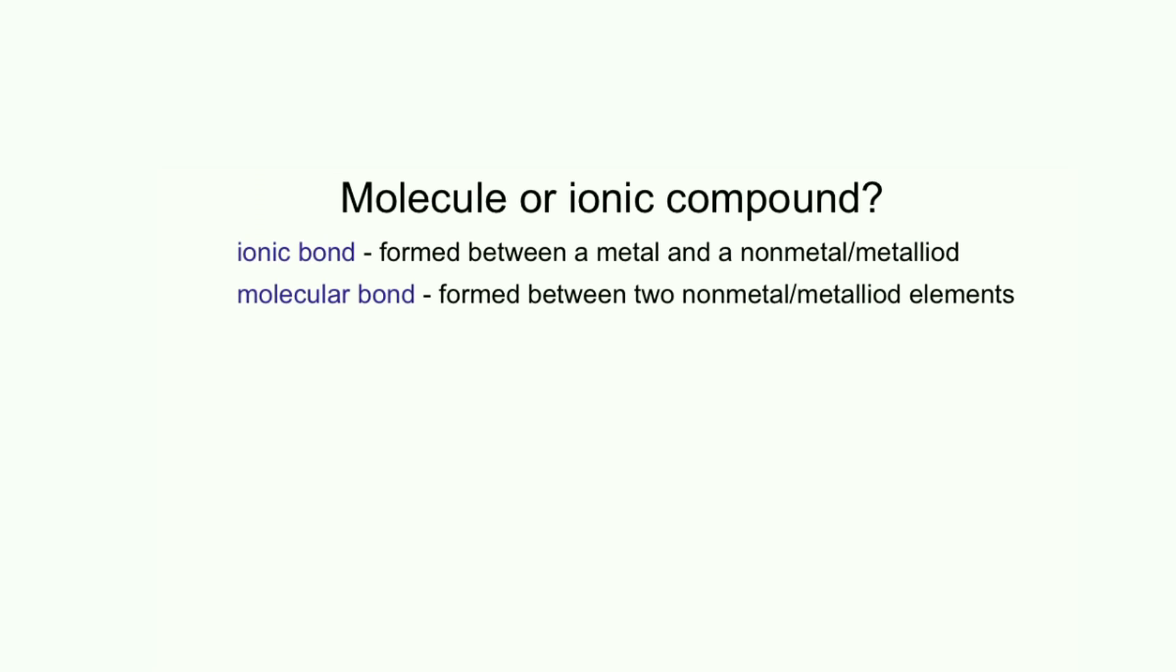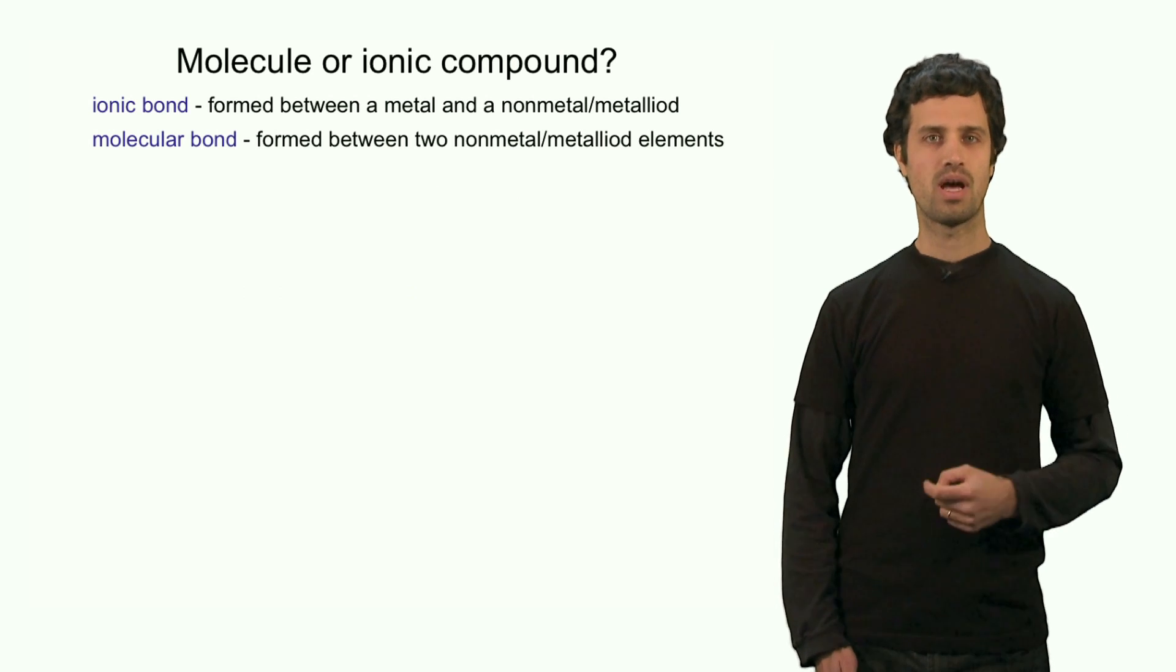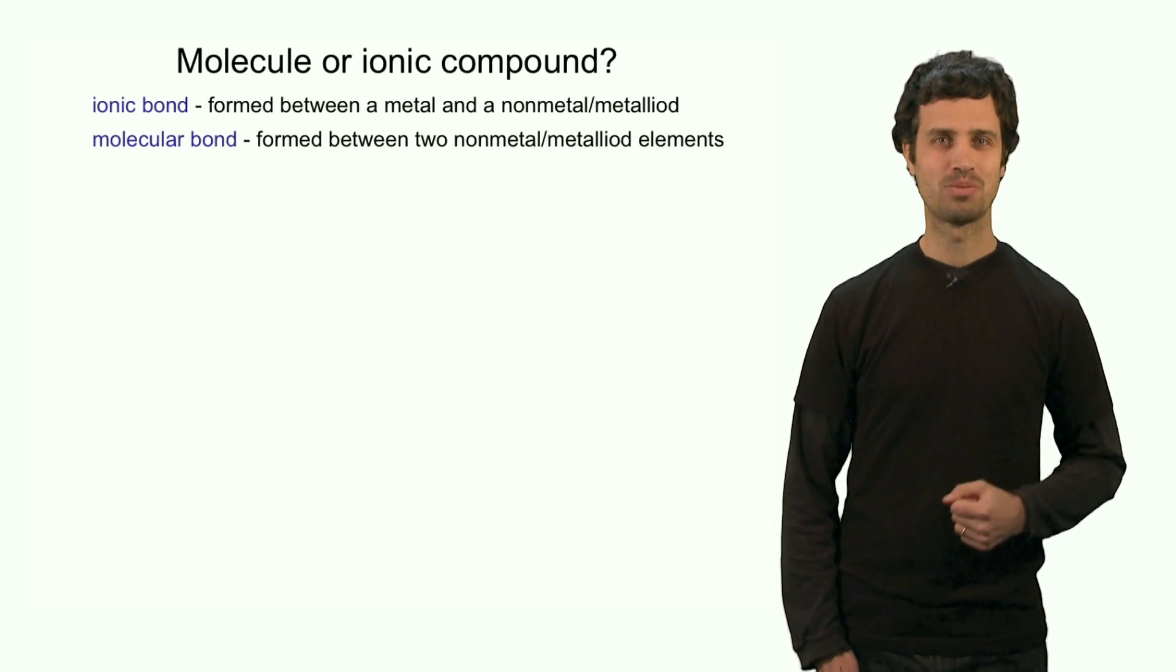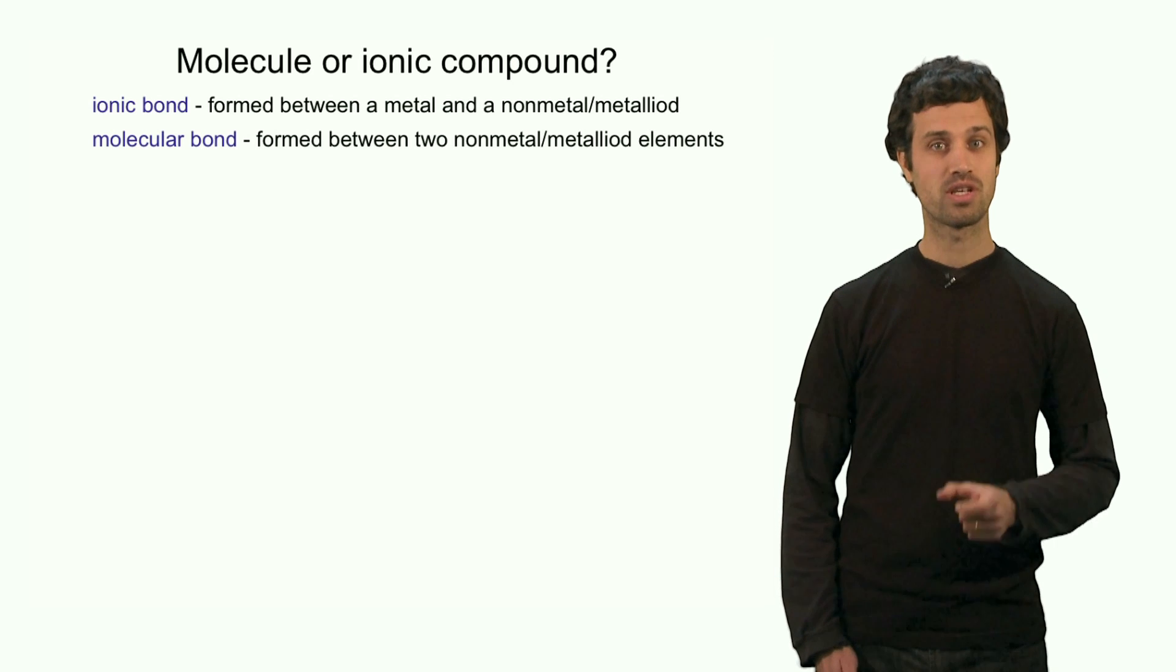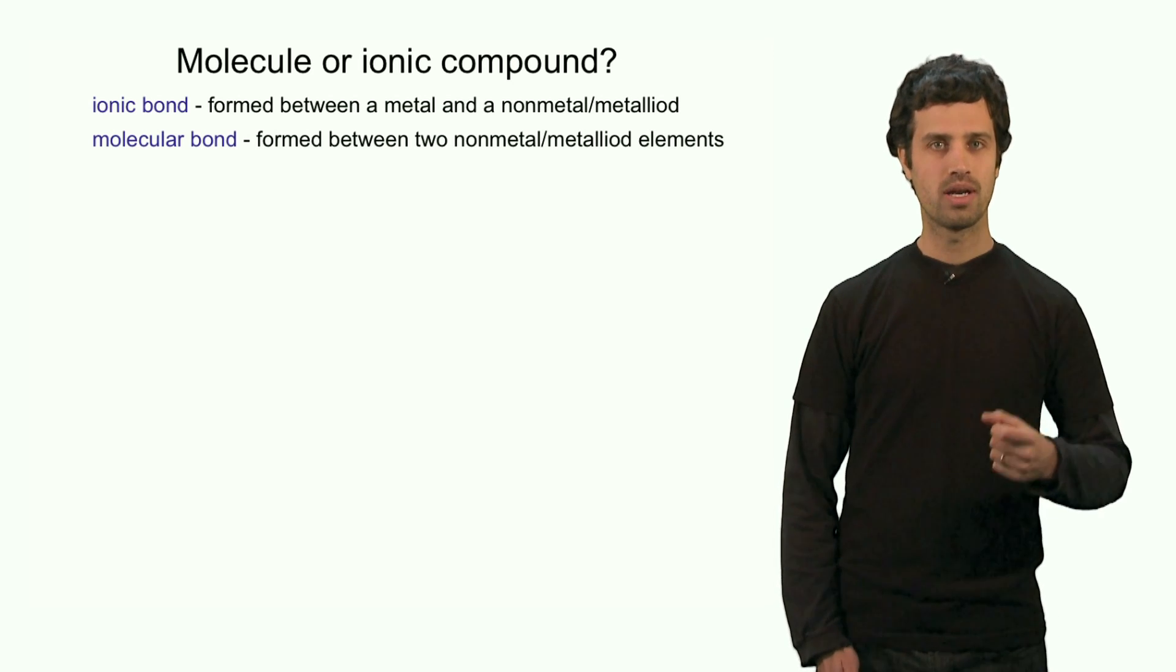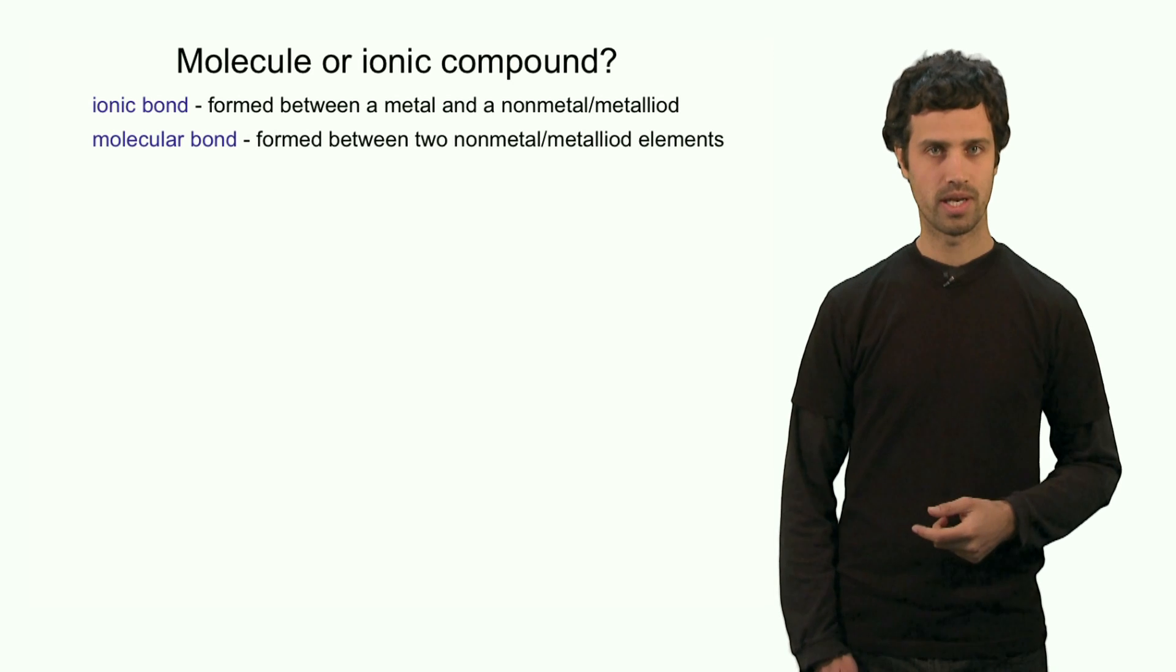In a covalent bond or a molecular bond, we need to have two elements that are both not a metal. So that means these two elements are either a nonmetal or a metalloid. So determining whether a bond is ionic or molecular comes down to determining whether the elements that form the bond are metallic, nonmetallic or metalloid.